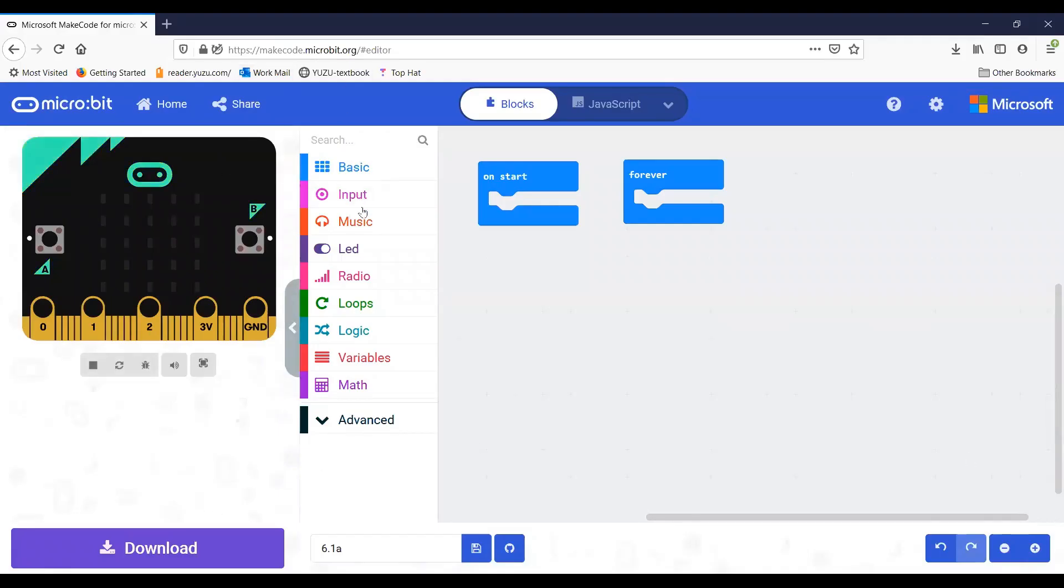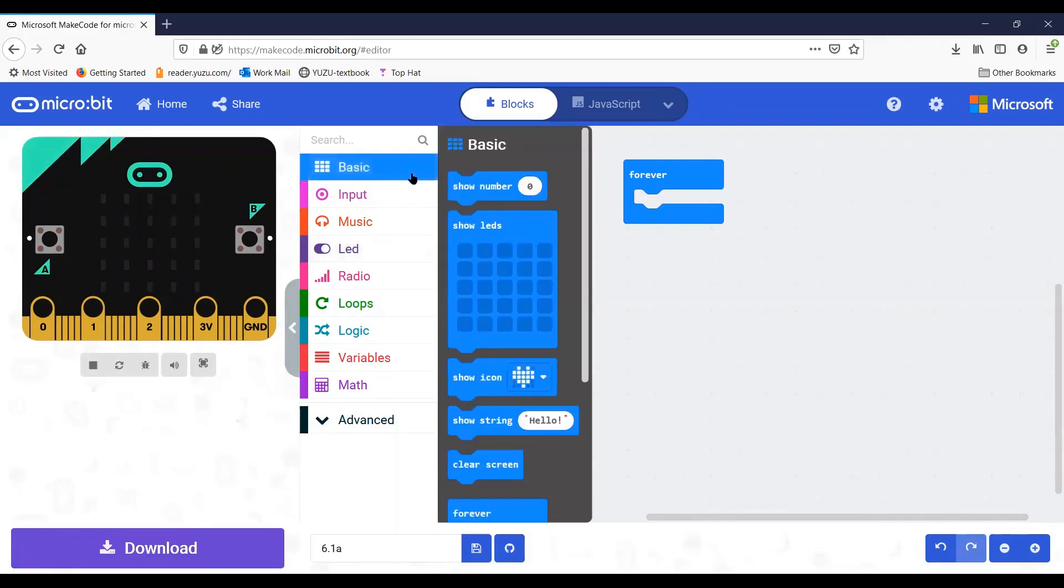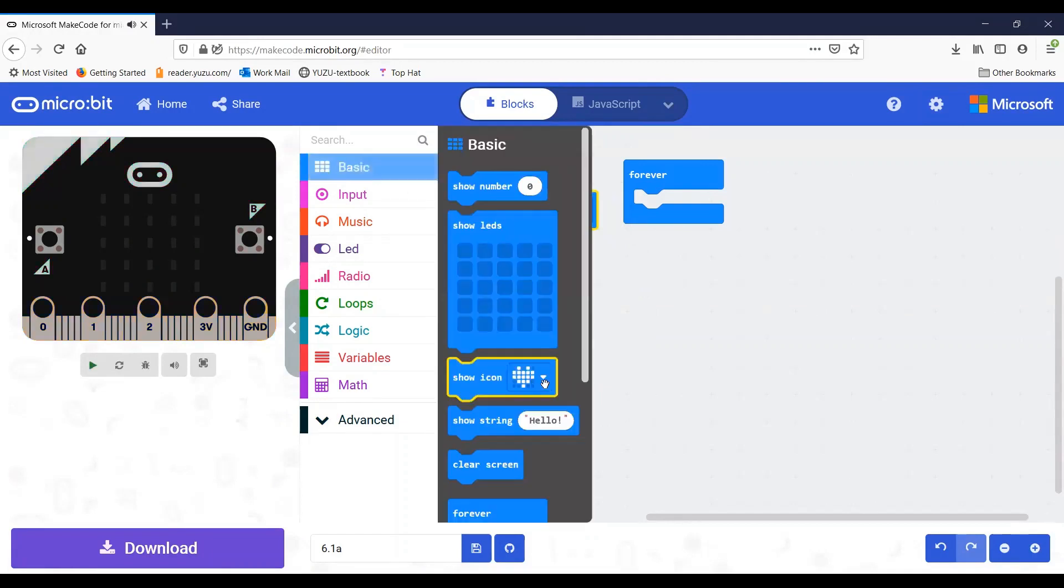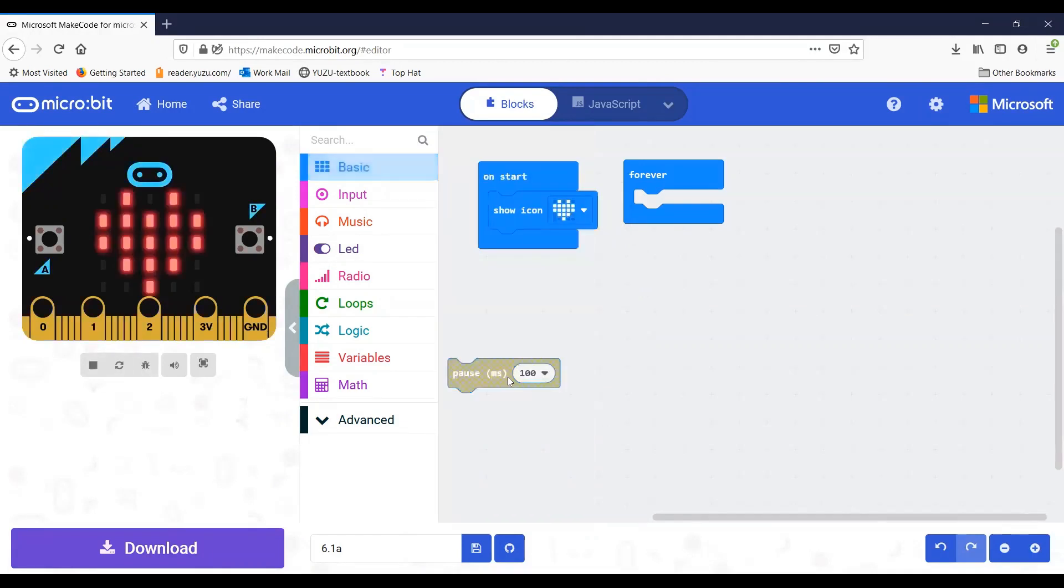Now we're at the makecode.microbit.org website. We're going to put that code together using the basic blocks: show icon, pause for two seconds (click the dropdown to change it to two seconds), and show string. By default, the message is 'hello.' When we look at the 5x5 grid screen, we can see the icon appear, pause for two seconds, and then show the string.